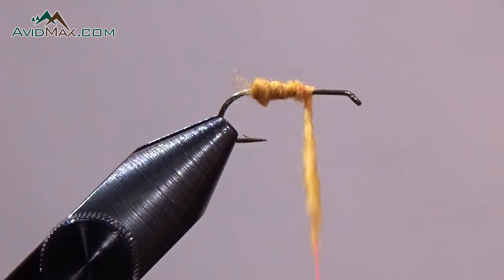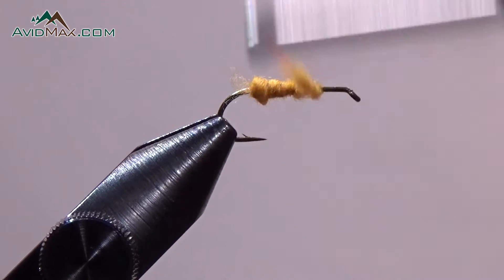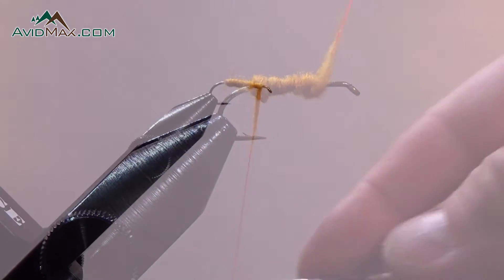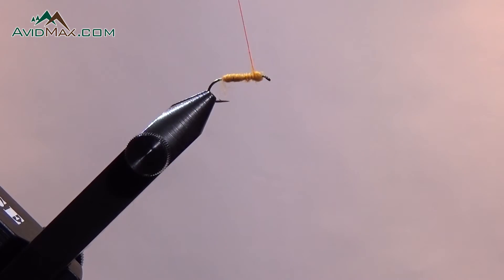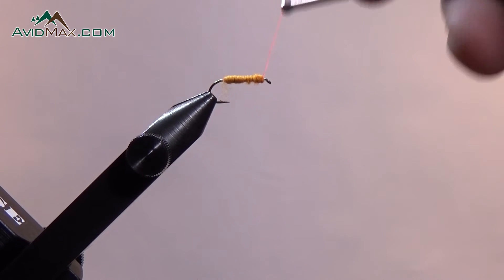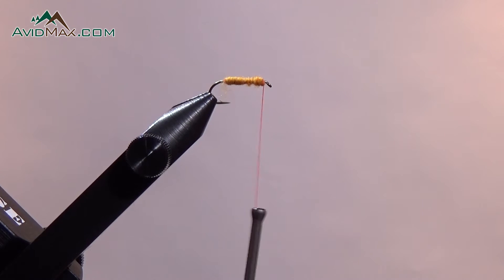We're going to keep wrapping that around to the front of our hook. Sometimes you can go back a little bit and then back forward. So that's how you attach dubbing to your thread and then apply it to your fly.